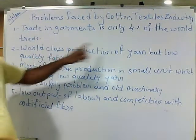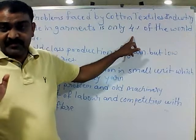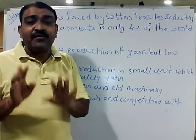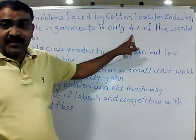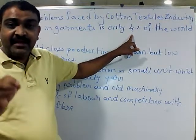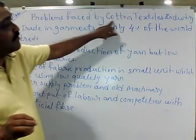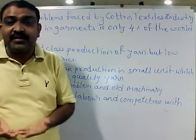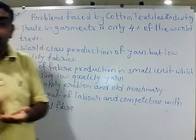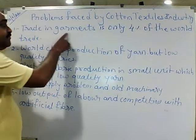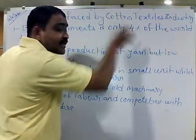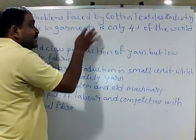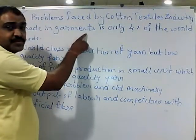If total world garment trade is 1000 crore rupees, India has sold only 4 crore rupees worth of garments — that is only 4 percent. That is comparatively very less. This is why the cotton textile industry in our country is not developing as fast as our potential allows. We are among the largest cotton-producing countries, but the problem is that we cannot sell the finished product — garment — well enough. Our garment trade percentage is only 4 percent.